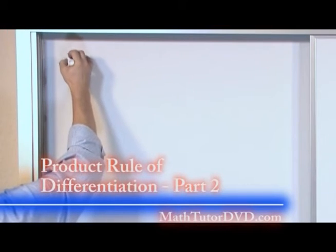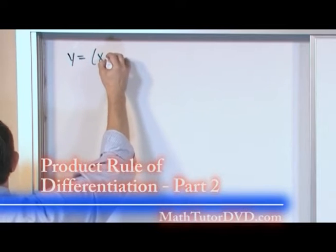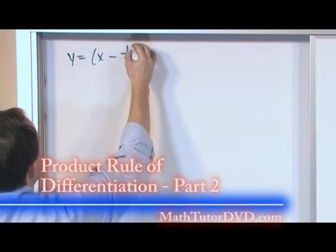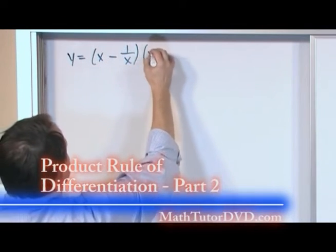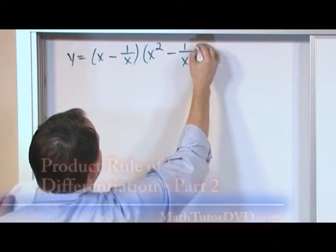Okay, our next problem is going to be y equals x minus 1 over x times x squared minus 1 over x squared.